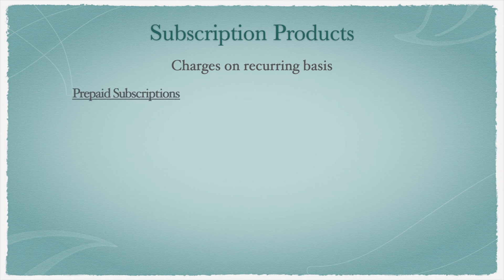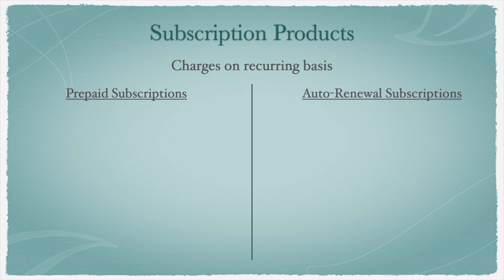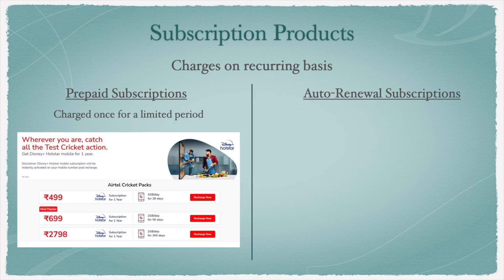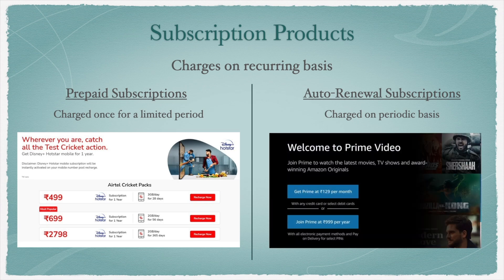Subscription products are divided into two types: prepaid subscriptions and auto-renewing subscriptions. In the prepaid subscription model, users are charged once for a limited period — for example, a 6-month payment for an online magazine. In auto-renewable subscriptions, users are charged on a periodic basis until they cancel — for example, a monthly subscription to a music app or an OTT app.